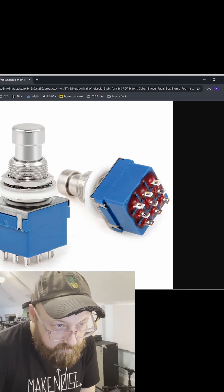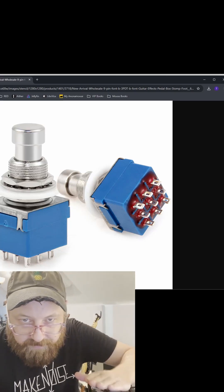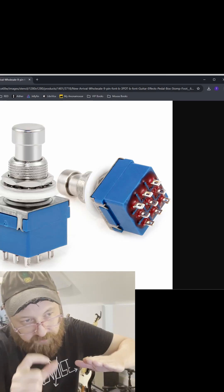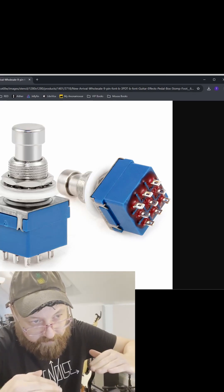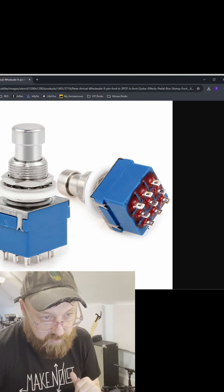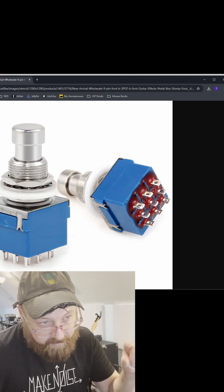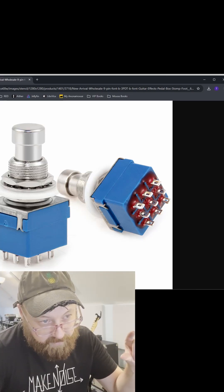So this middle trio of lugs are where your signal comes in. And then the switch will toggle between them flipping up to the top row or down to the bottom row. So if we put something in here, it's connected up top. If we flip it, it'll connect down to the bottom, flip it, connect back to the top.